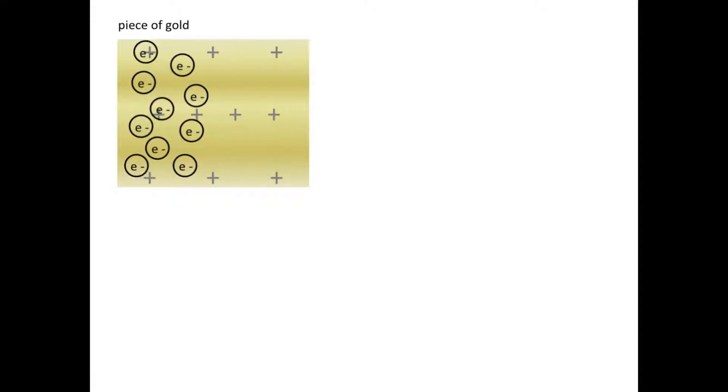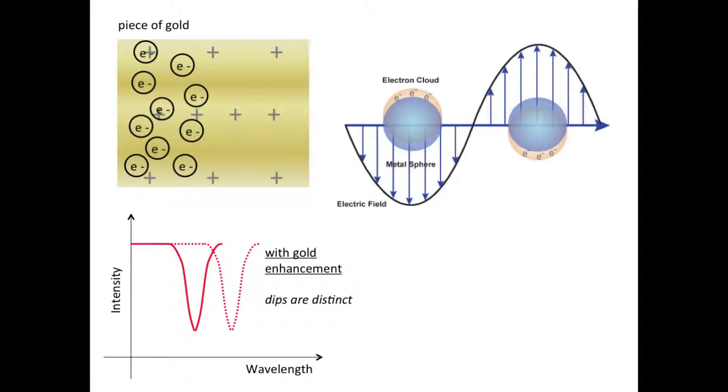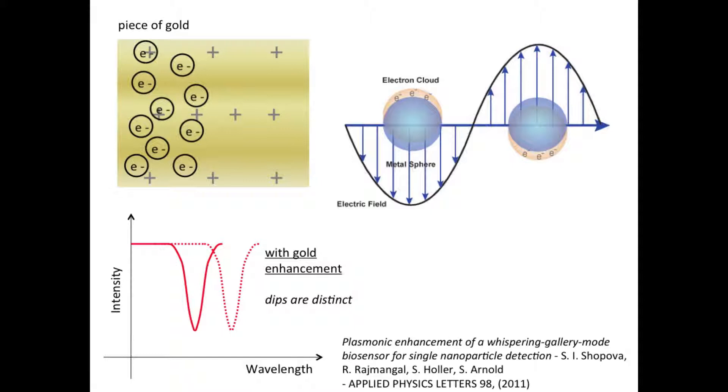Without the gold enhancement, we have trouble detecting the protein. If a protein lands on a gold hotspot, the resonant wavelength changes so that we can more easily distinguish between the dips. The effect is actually due to the oscillating electrons enhancing the electric field around the sphere. For more details, you can check out the reference here.